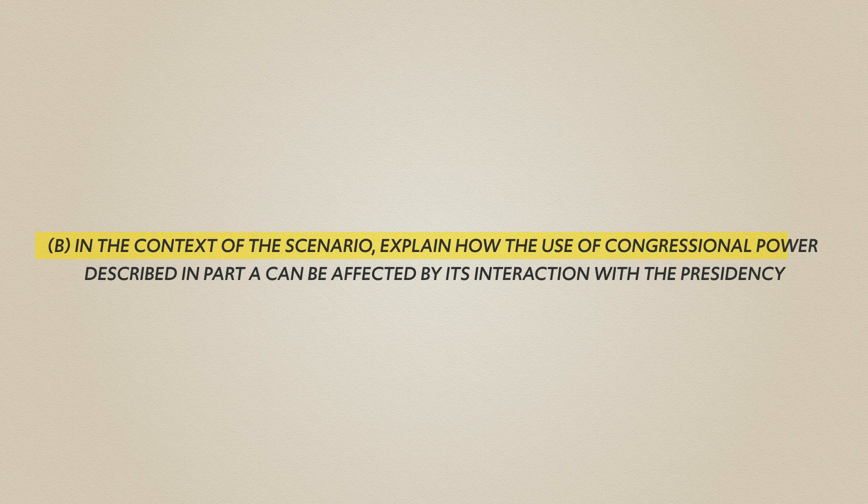Part B says: in the context of the scenario, explain how the use of congressional power described in Part A can be affected by its interaction with the Presidency. All that's saying is: if Congress passes the bill, what can the president do? According to the Constitution, the president has two options: sign the bill or veto it. A full answer: 'Once the bill reaches the president's desk, he can sign it into law if he supports it. However, if he opposes it, he has the constitutional power to veto it. If vetoed, Congress can rework the bill or override the veto with a two-thirds vote, making the bill law without the president's signature.'